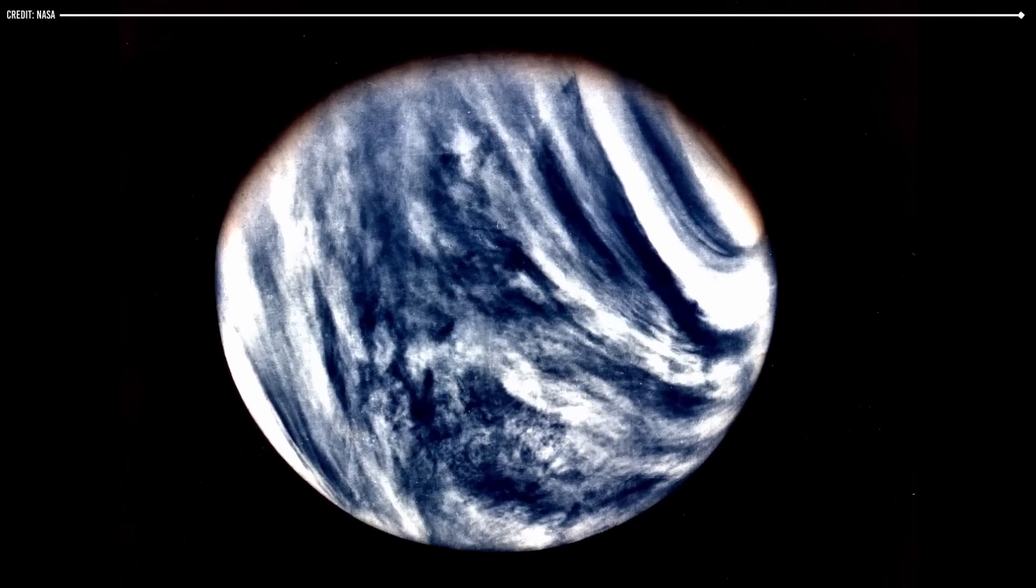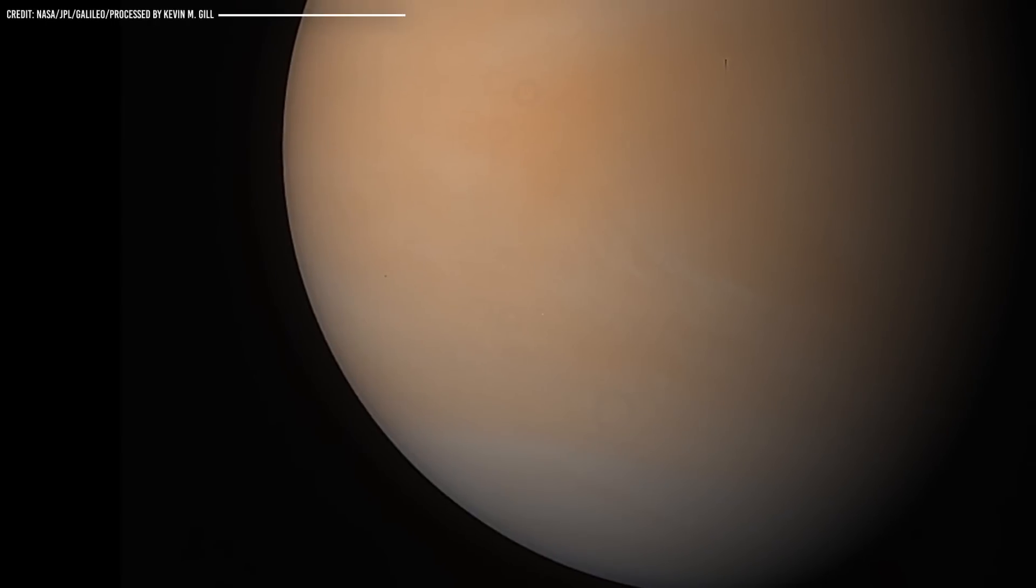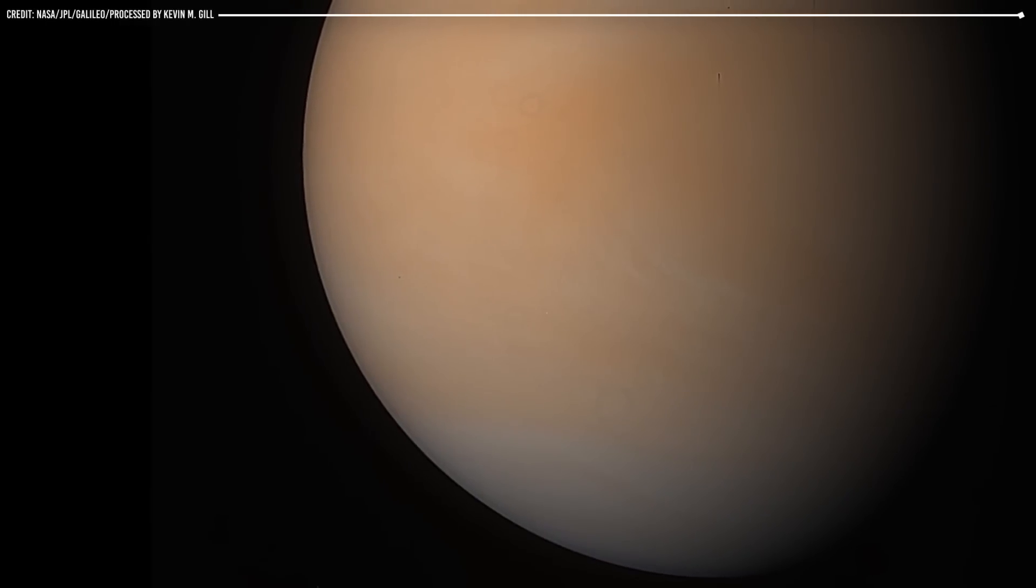The thick atmosphere on Venus also prevents heat from escaping back into space, contributing to the planet's high surface temperature. The thick clouds on Venus also block most of the sunlight from reaching the planet's surface, creating a dim environment with little to no sunlight.